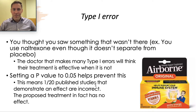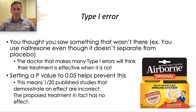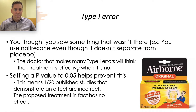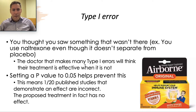Type 1 error is when you think you saw something — it's also called alpha error. You think you saw something that wasn't there. For example, you use naltrexone for alcohol use disorder and it doesn't separate from placebo, yet you're still using it. The doctor that makes many type 1 errors will think their treatment is effective when it is not. This raises the question: if you're going to err on one side or the other, do you want to overtreat or undertreat? The doctor who overtreats commits more type 1 errors; the doctor who undertreats commits more type 2 errors. Hopefully we'll find a balance over time.